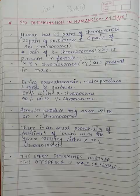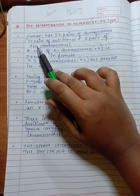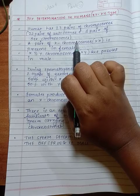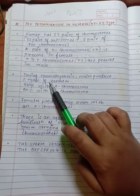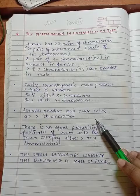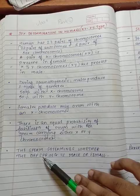Now we come to sex determination in humans, that is XY and XX type. Humans have 23 pairs of chromosomes: 22 pairs of autosomes plus one pair of sex chromosomes. A pair of X chromosomes XX is present in a female, and X and Y chromosomes XY are present in male. During spermatogenesis, males produce two types of gametes: 50% with X chromosome and 50% with Y chromosome. Females produce only ovum with an X chromosome. There is equal probability of fertilization of ovum with the sperm carrying either X or Y chromosome. The sperm determines whether the offspring is male or female.